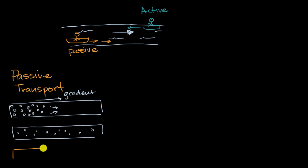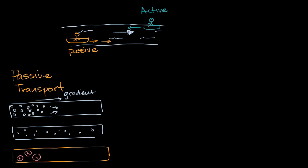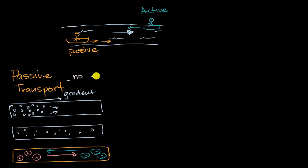You could also have an electrical gradient. Imagine a container filled with water where on the left you have a bunch of positive particles and on the right a bunch of negative particles. The positives repel each other and the negatives repel each other, but positives attract negatives. Things would naturally move down their electrical gradient. Whether you're talking about a concentration gradient, an electrical gradient, or a combination — an electrochemical gradient — when you move along with your gradient, you don't have to use any energy. That's known as passive transport; it just happens naturally.